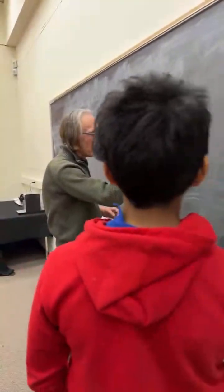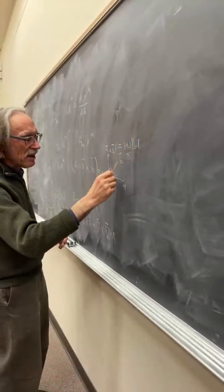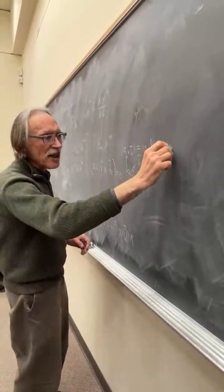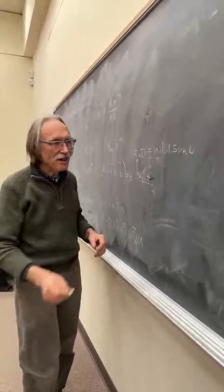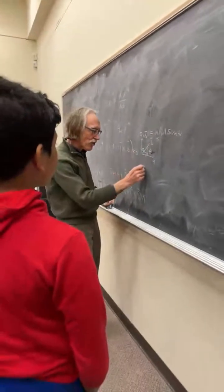And now, what is the length of this? This is the length of A times the length of B times, sorry, this is A theta times the sine of A theta.